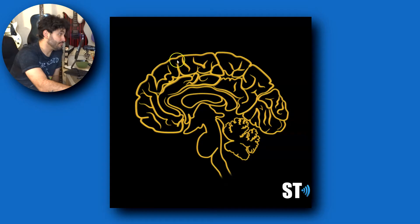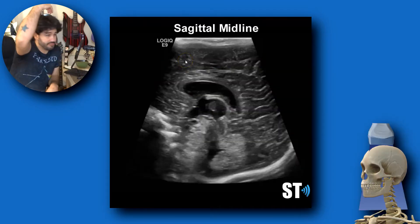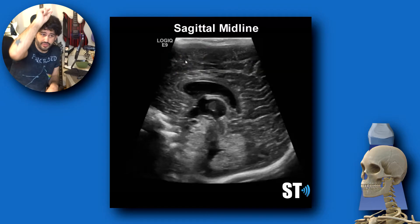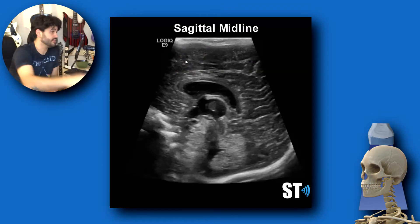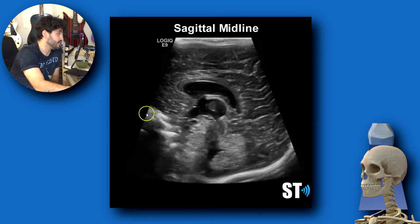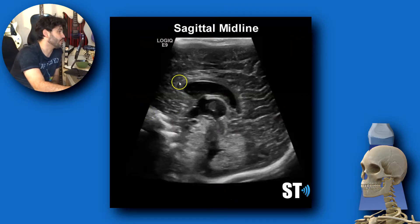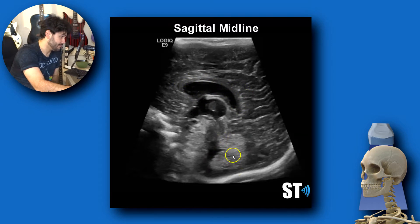Beginning with sagittal midline. You're going to go on the patient's anterior fontanelle, sagittal midline, with the transducer marker facing the patient's front. So here's your anterior portion, posterior, superior, inferior. You have your corpus callosum, cavum septum pellucidum, cavum vergae, third ventricle, cerebellum, and fourth ventricle.